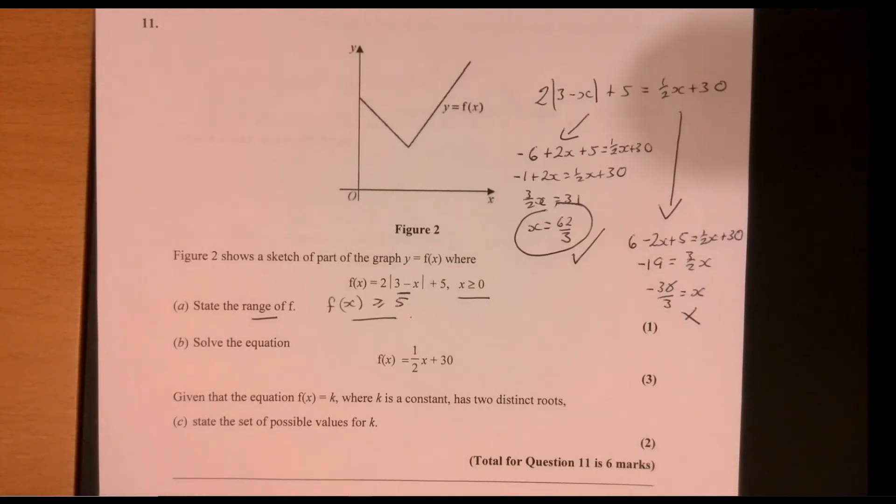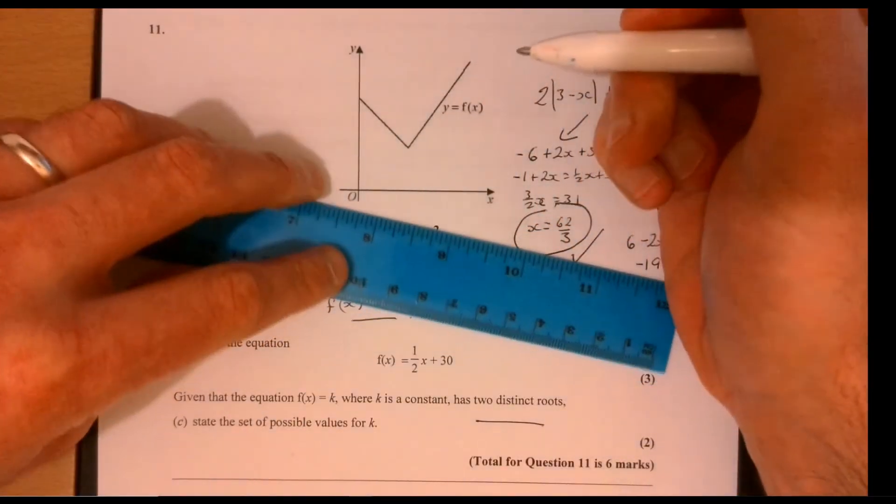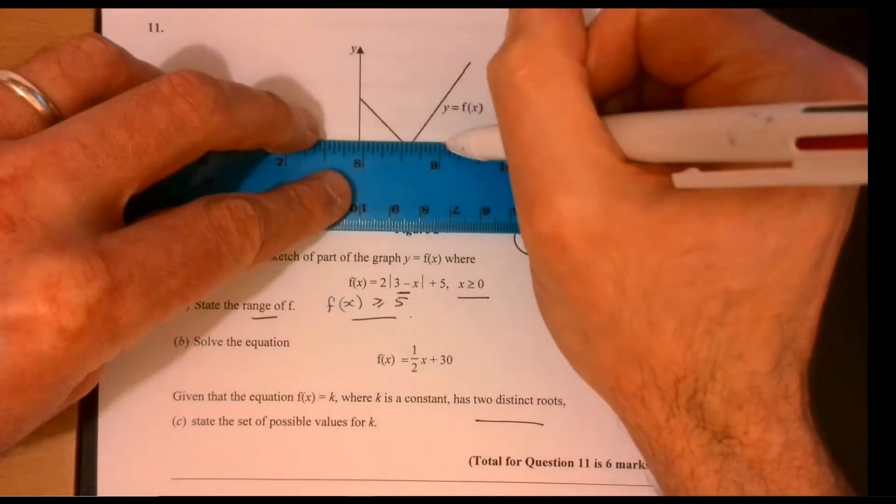Now part c. So it says given the equation, so the function of x equals some constant k, and it's got two distinct roots. So the best thing to do is just to figure out, right, what does that actually mean? So it means it's equal to some constant number.